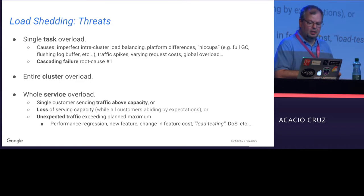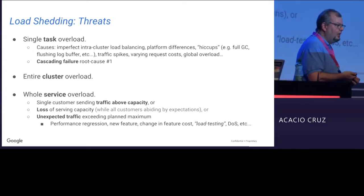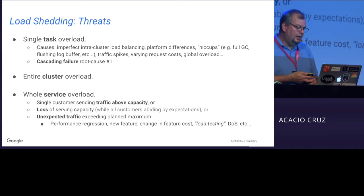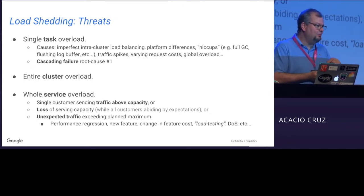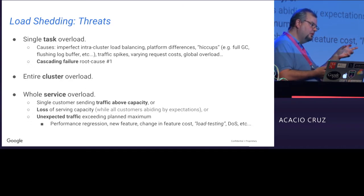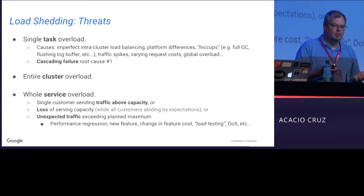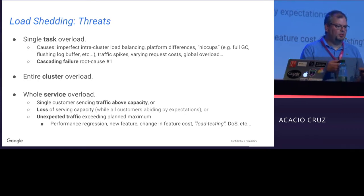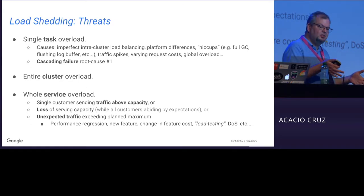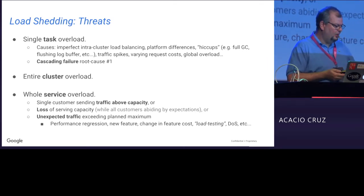At Google, service overload sometimes happens because of launches — if there's a big New York Times and Google I/O launch and 50 million people show up at the same time, we can have service overload. Somewhere in the middle, there are overloads that happen at the cluster level: we deploy applications in many clusters, and it's possible a single cluster is overloaded but not the overall service. This happens when batch jobs load data locally and only use the service in one specific cluster.